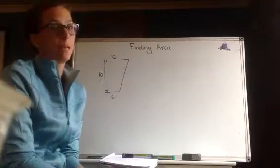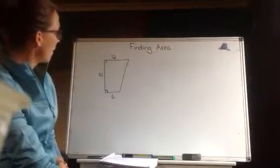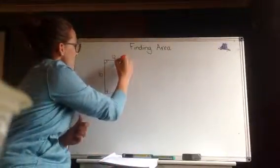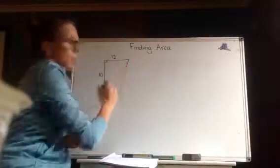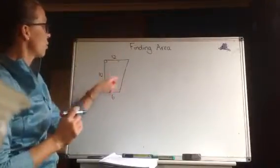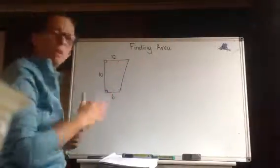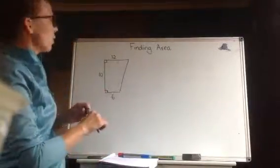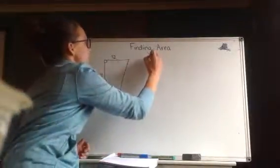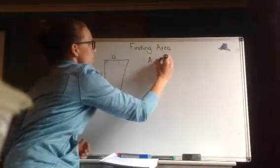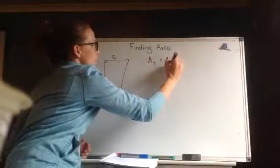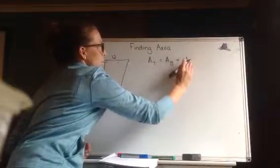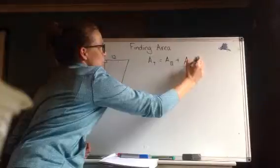For example you might get something like this. Now everybody's brains work a little bit differently. So some people will look at this and they'll go, oh this is a rectangle here attached to a triangle. That's one way of looking for things. And so what you can do is you can go, okay well the total area,